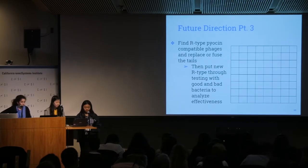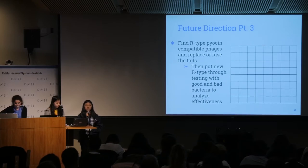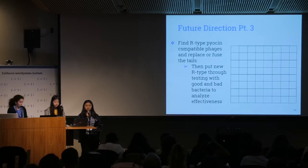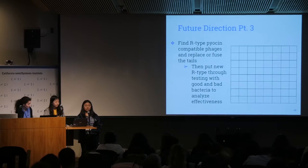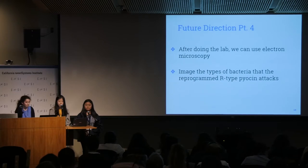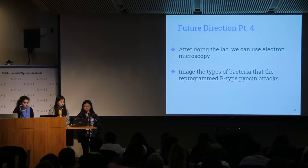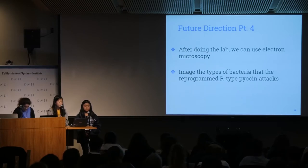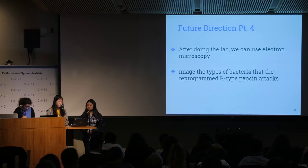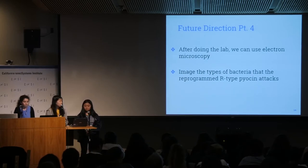After finding a compatible phage for the R-type Pyocin that will fuse or replace a tail, we could put it into lab testing, applying the R-types to good and bad bacterial cells through a selection of wells in order to test how well or badly it affects the cells. After the lab, we can use electron microscopy — either scanning electron microscopes or transmission electron microscopes — to image the types of bacteria that the reprogrammed R-type Pyocin attacked, track the progress of the bacteriophage, and see what needs to be changed if it attacked the good bacteria.